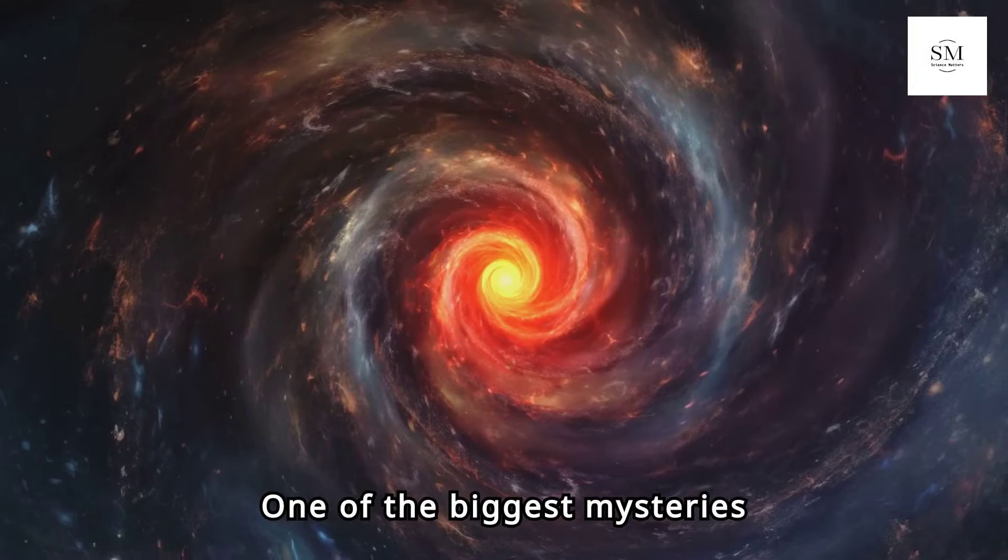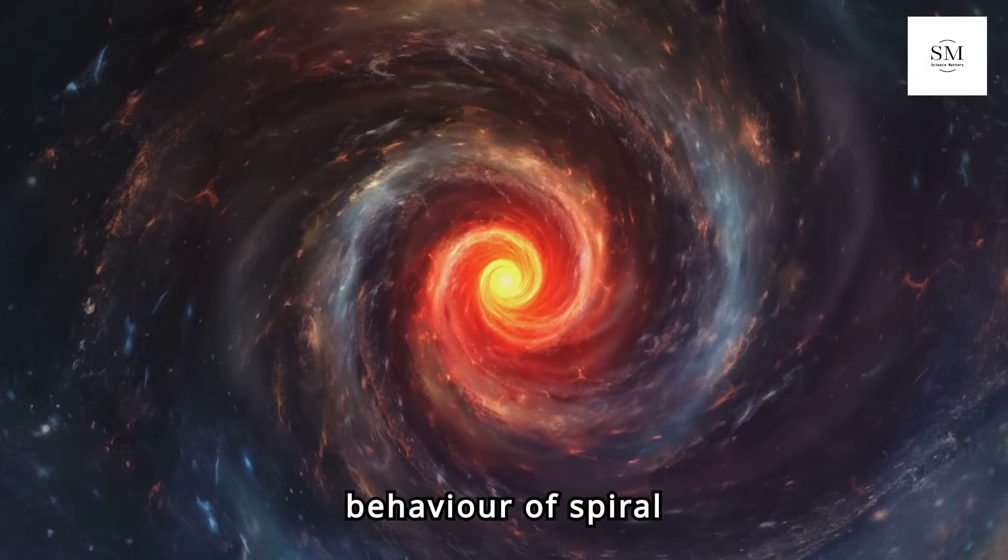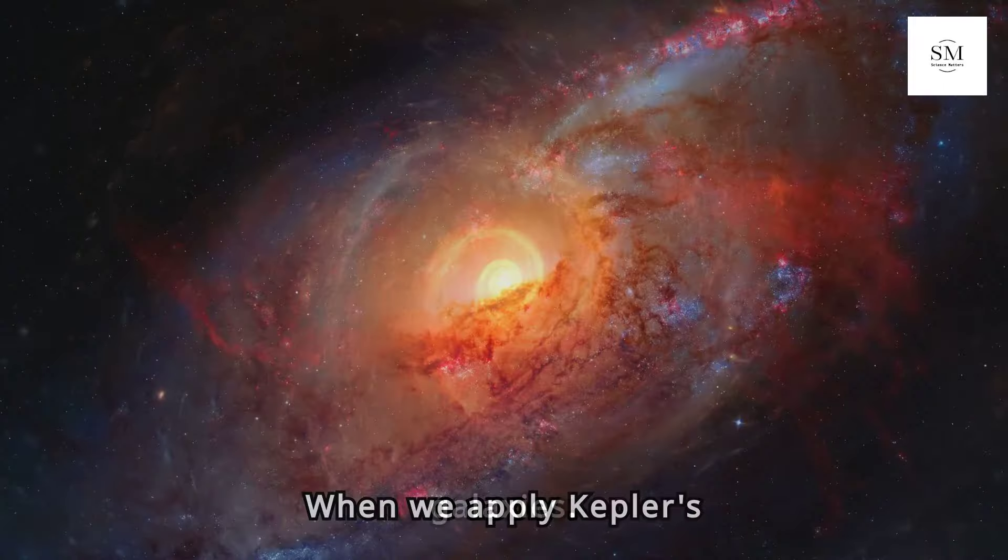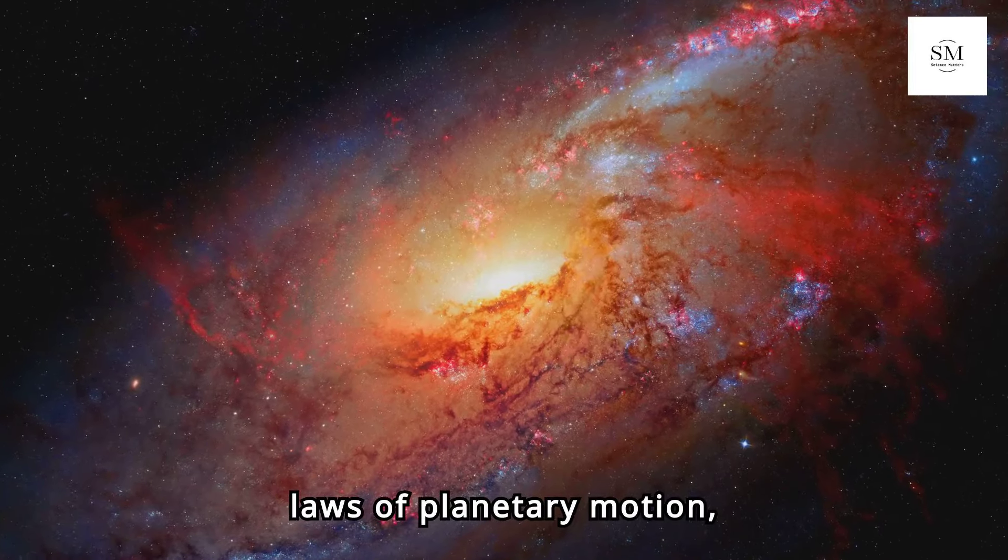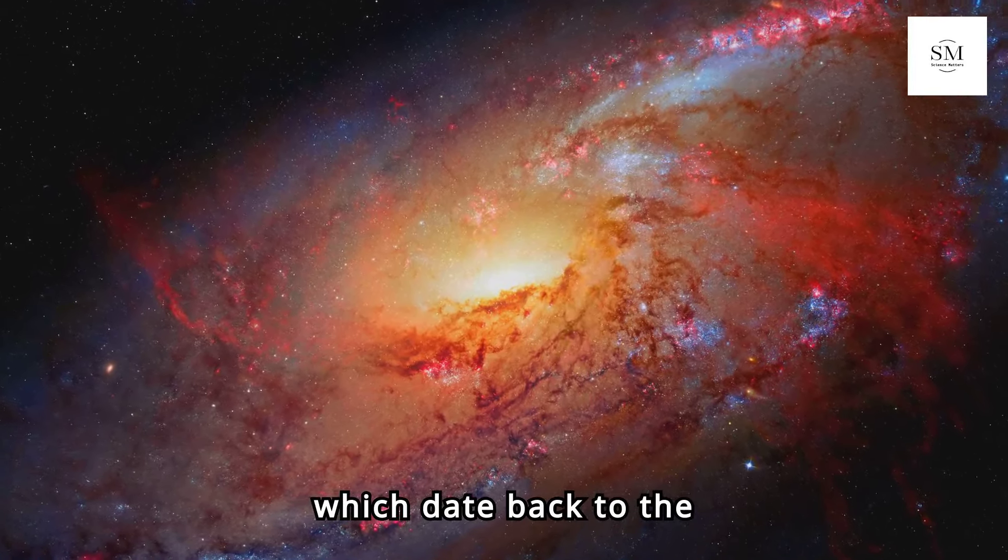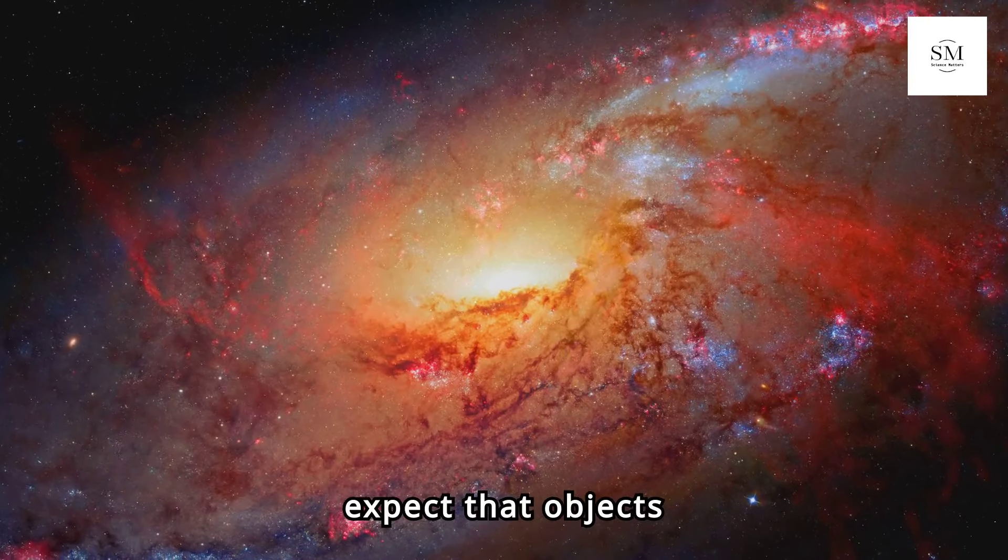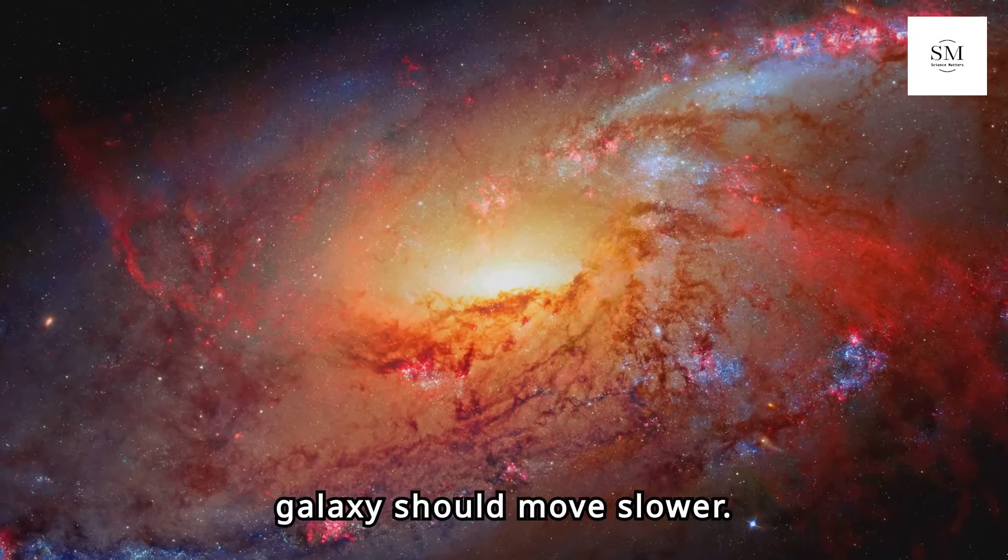One of the biggest mysteries in astronomy involves the behavior of spiral galaxies. When we apply Kepler's laws of planetary motion, which date back to the 1600s, we expect that objects farther from the center of a galaxy should move slower.